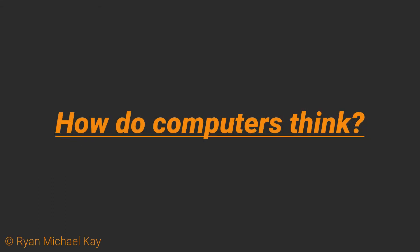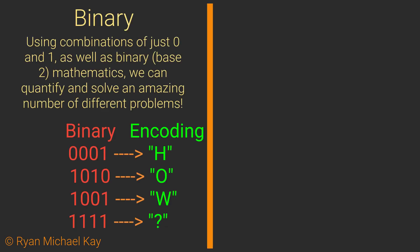In order to explain how computers understand the Java code we write, we need to know a bit about how computers represent information. As you may have heard before, most modern digital computers process and store information using zeros and ones, also known as binary.